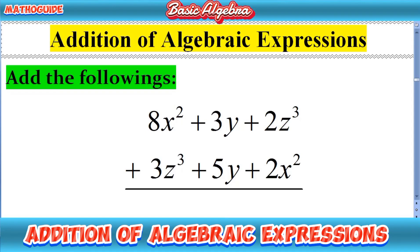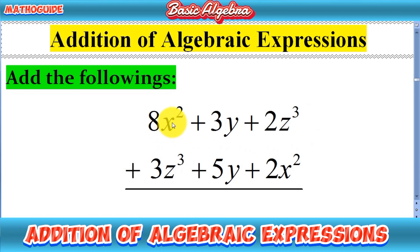Hi guys, welcome to my YouTube channel. Today we are going to start addition of algebraic expressions, which is a very important topic of basic algebra. We have a simple question: add the following two algebraic expressions. The first is 8x squared plus 3y plus 2z cubed, and the second is 3z cubed plus 5y plus 2x squared.